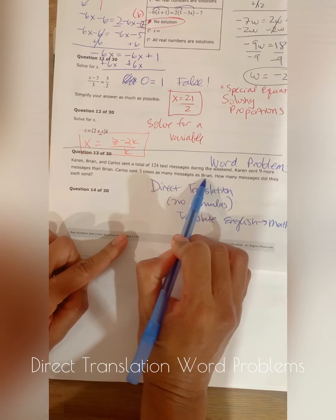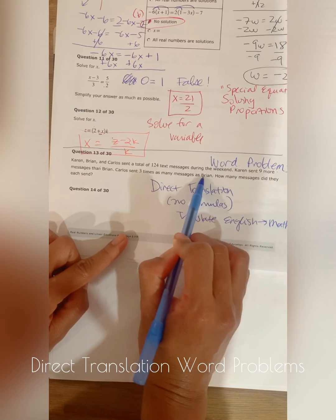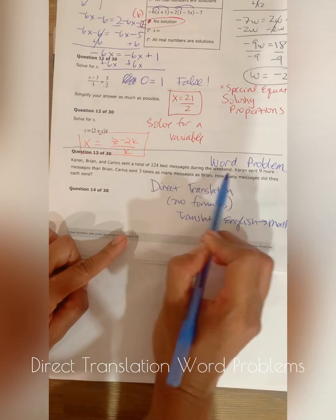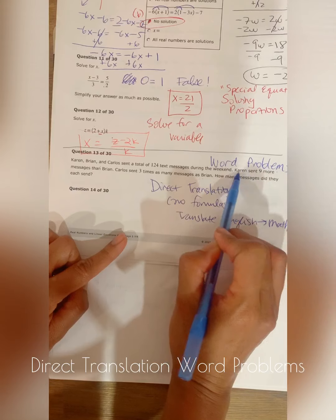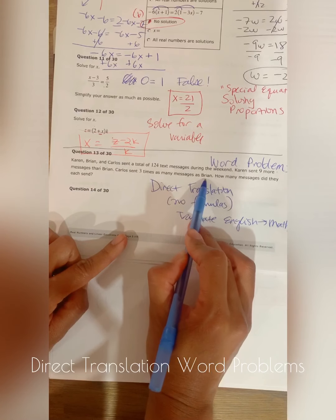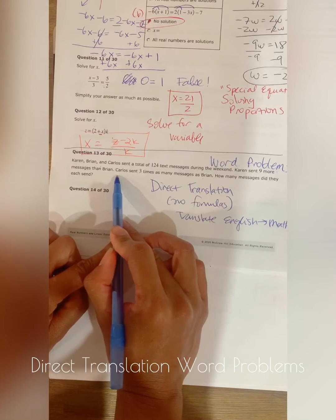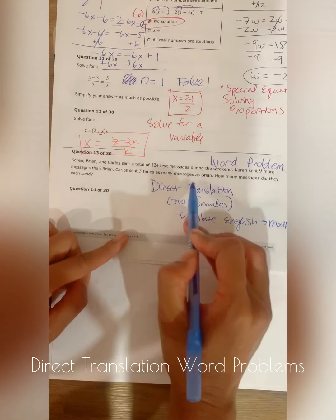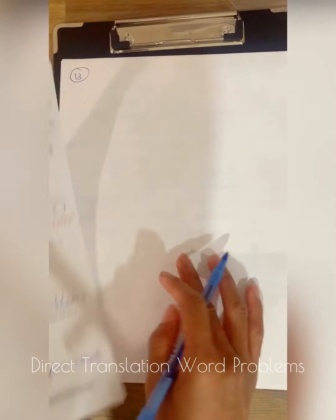If we know what Brian's answer is, how many text messages he sent, we'll be able to find what Karen's is because Karen sent nine more than Brian. And if we knew what Brian's was, then we'll know what Carlos is either because Carlos sent three times as many messages as Brian.